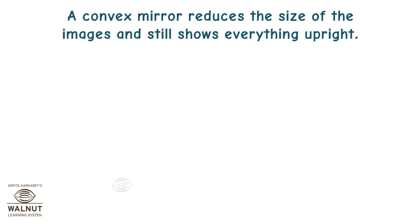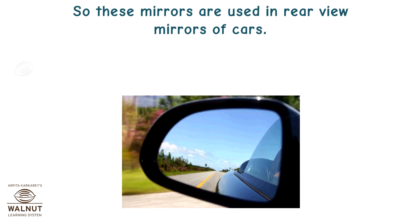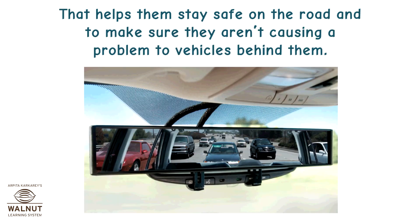A convex mirror reduces the size of images and still shows everything upright, so you can see a much bigger part of the world through a convex mirror than through a plain mirror. These mirrors are used as rear-view mirrors of cars, so drivers can see a bigger view of the area behind them. That helps them stay safe on the road and make sure they aren't causing a problem to vehicles behind them.